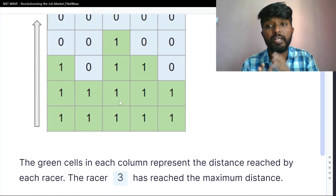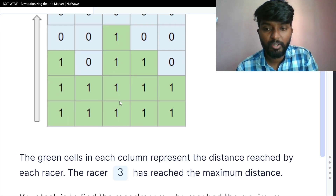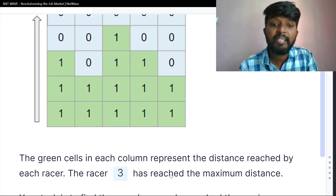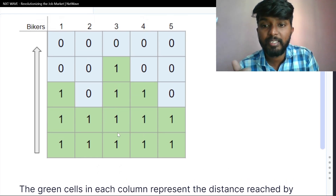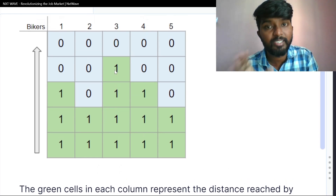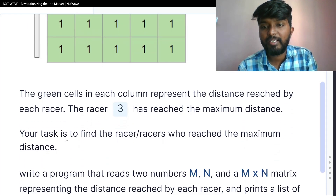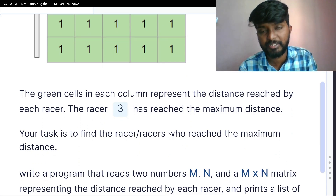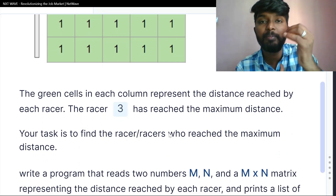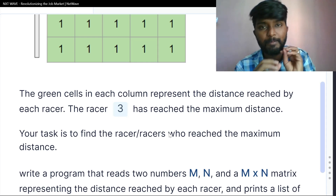The racer who has reached the maximum distance — racer 3 has reached the maximum distance. Your task is to find the racers who reached the maximum distance ever reached, and print their numbers.